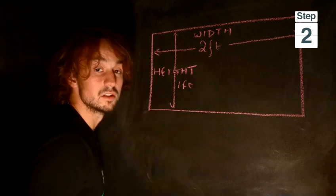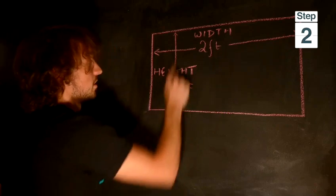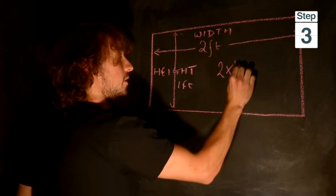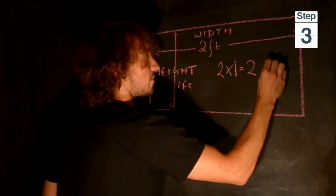All we need to do is take the width, take the height and multiply them together. Two times one equals two. That is two square feet.